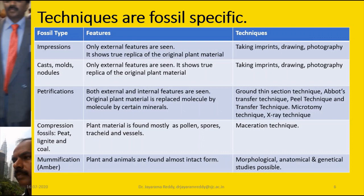Coming to Petrification — a fossil where the plant is completely converted into rock by lithification. Organic matter is completely replaced by inorganic matter. In this case, you can study both external and internal features of the plant. The fossil can be cut into thin sections, and these sections are studied like the sections of a stem. We also have peel technique, transfer technique, microtomy technique, and X-ray technique — in all these cases a cross section of the rock is studied like a normal stem.